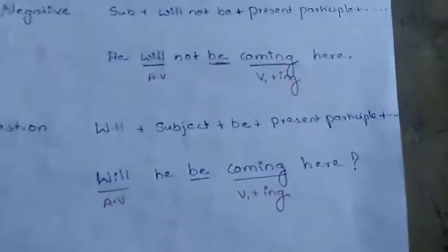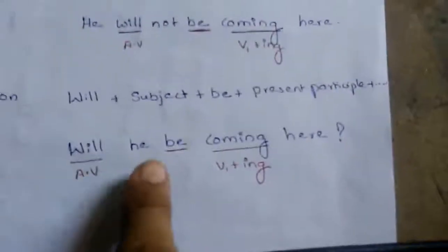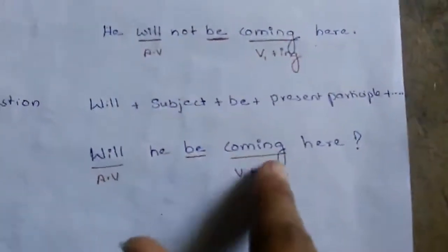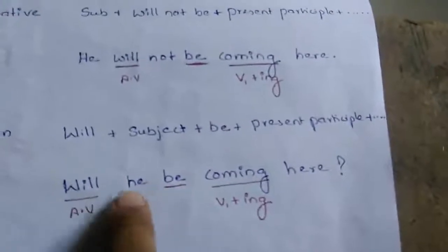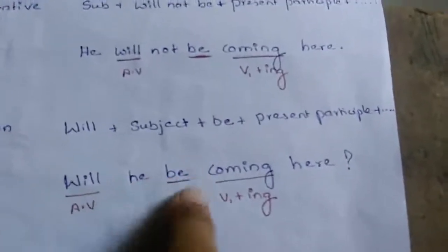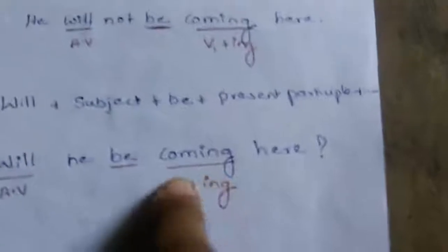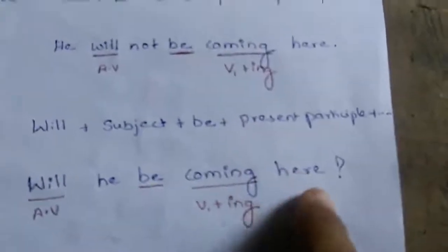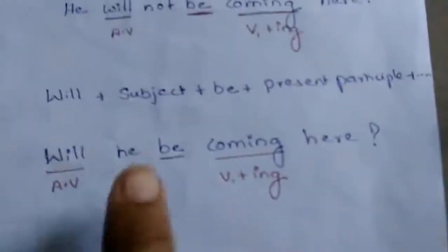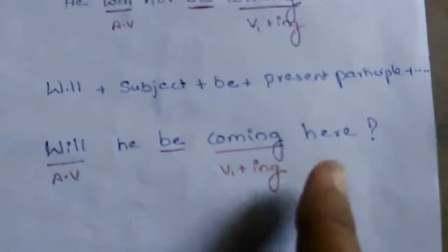Now we take the question form — the structure of the question. What we do is bring the helping verb to the front of the sentence to form the question: 'Will he be coming here?' So the order is: will (helping verb), then the subject, then be form, then present participle, and then the rest of the sentence. 'Will he be coming here?' — this is the question structure.